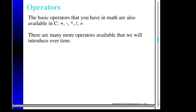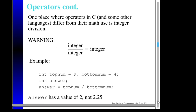We often need to do math with the values stored in variables, and we have the same basic operators as in math: the plus sign, minus sign, star for multiplication, slash for division, and equal sign for assignment. One place where it's very easy to make a mistake is that in C, when I divide an integer by an integer, I get an integer.